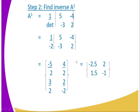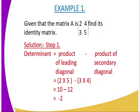Then move to step two, where you find the inverse of A. The inverse, written as A to the power negative one, is given by one over the determinant of A, multiplied by a specific matrix. This matrix is derived from matrix A, where the positions of elements are rearranged.